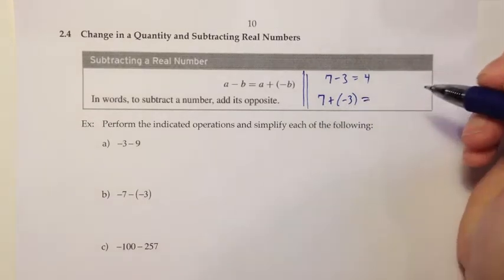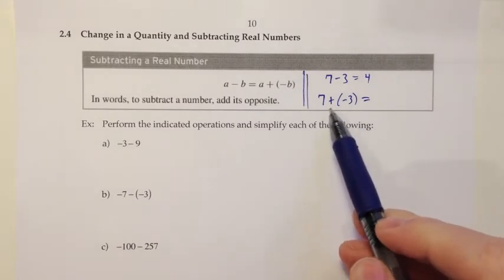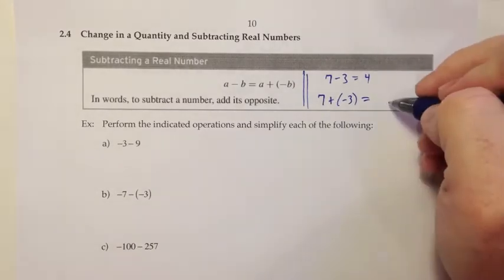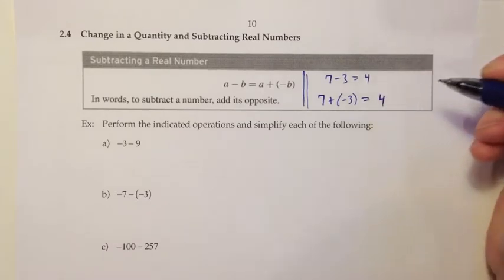So instead of thinking of 7 minus positive 3, I'm thinking of this as 7 plus negative 3. And as we learned in the last section, when you have different signs, you take the difference, and the bigger number wins out on sign. So the difference is 4, and the bigger number is positive, so we still get 4.